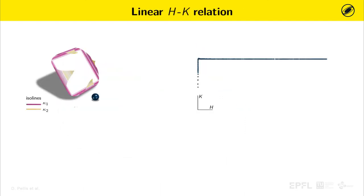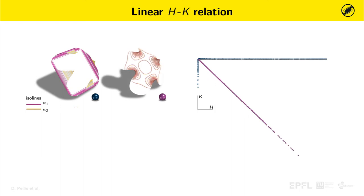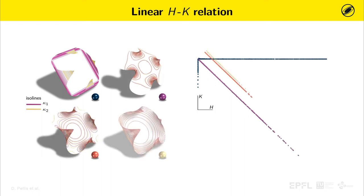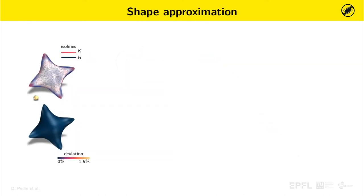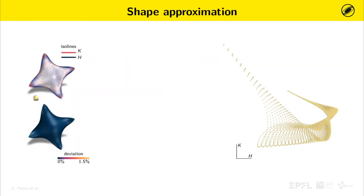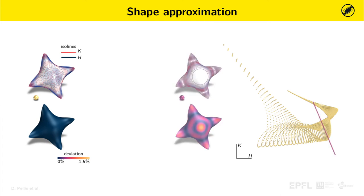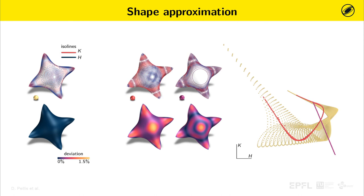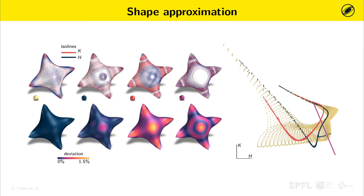By imposing a linear curvature relation, we can also design special Weingarten surfaces such as developable surfaces, minimal surfaces, and constant mean curvature surfaces with prescribed mean curvature. Here, we start from a shape and approximate it with a Weingarten surface by fitting a linear curvature relation, by fitting a B-spline curvature relation, and by just aligning the curvature isolines. We can observe that without constraining the curvature relation, we achieve a better shape approximation.